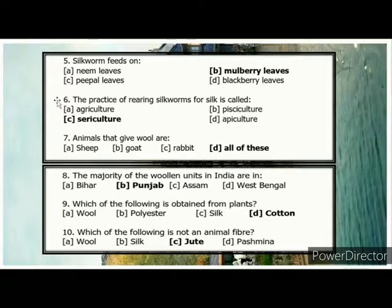Sheep, Goat, Rabbit. The majority of the weaving units in India are in — Answer: Punjab. Which of the following is obtained from plants — Answer: Cotton. Which of the following is a natural animal fiber?